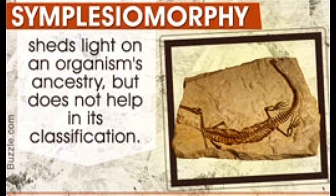This has led to the rise of a new system called cladistics, which groups those organisms together who show similar ancestral characteristics. In this system, each group is called a clade, and contains an ancestor who first evolved a characteristic, along with its descendants. Depending on whether a characteristic is simply transmitted to the descendants or evolved further, and how primitive it is, these traits are categorized into different types under the cladistic system. One of these types is a symplesiomorphy, which is explained in the following sections.